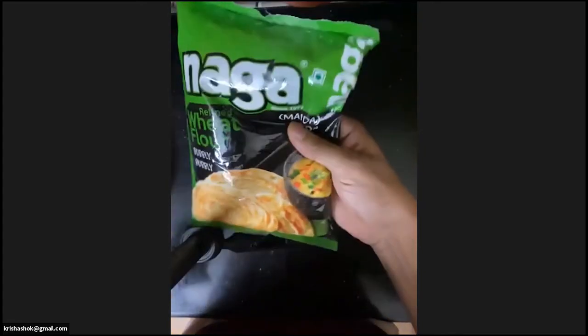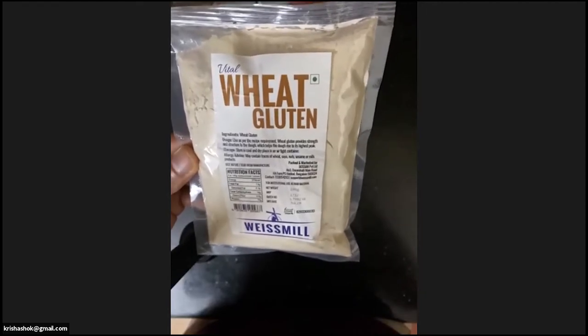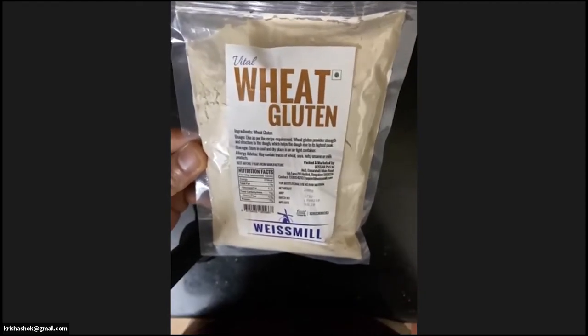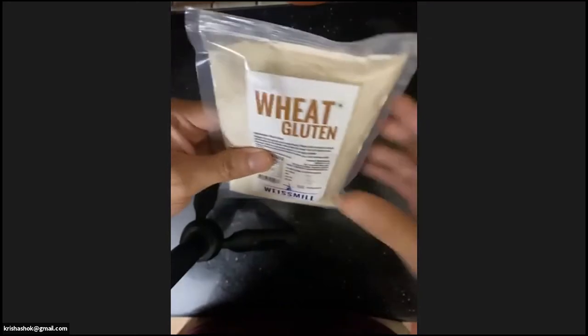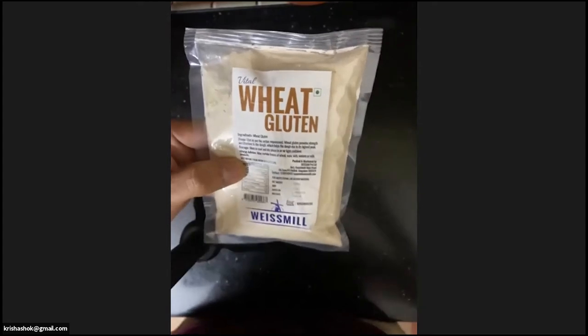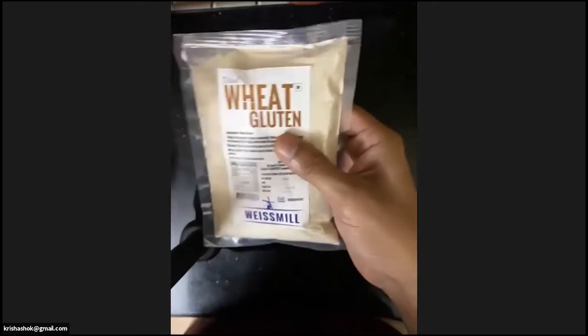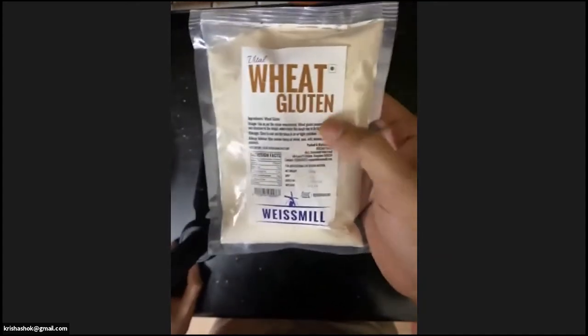I'm going to introduce you to something that will really change your life, especially if you're using Maida. Maida tends to be slightly lower protein, which doesn't make it as suitable as bread flour for baking breads. You can fix that problem with something called wheat gluten. This is literally pure 100% vital wheat gluten, extracted from wheat. You can just add a teaspoon for every cup and that will increase the protein percentage of your flour.